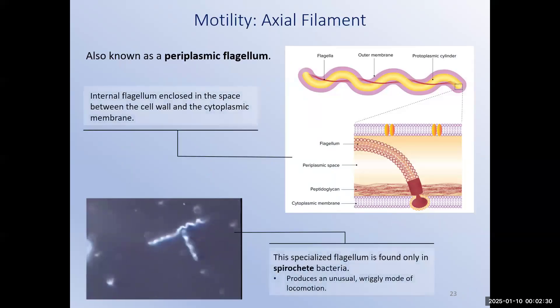Spirochete bacteria have an unmistakable wriggly motion as they move. This is due to a specialized type of flagellum known as a periplasmic flagellum or axial filament. Unlike bacteria that have their flagella on the outer surface of the cell, spirochetes have a flagellum that is sandwiched between the cell wall and the cytoplasmic membrane. The structure and function of this flagellum is essentially the same as a more traditional flagella. The difference is that the unique configuration causes the corkscrew-shaped bacteria to twist as it moves. This twisting motion then propels the spirochete through its environment.